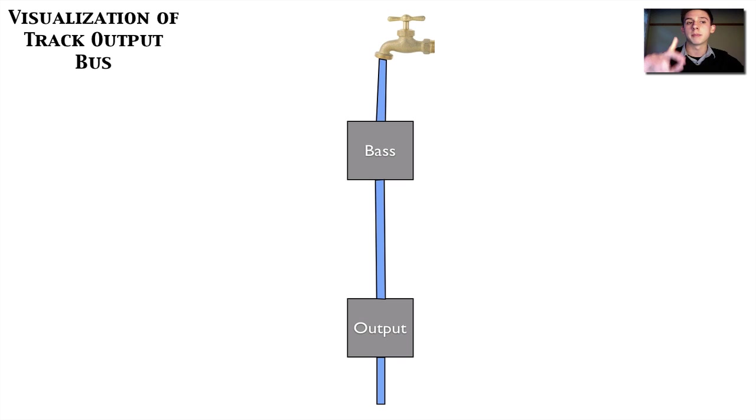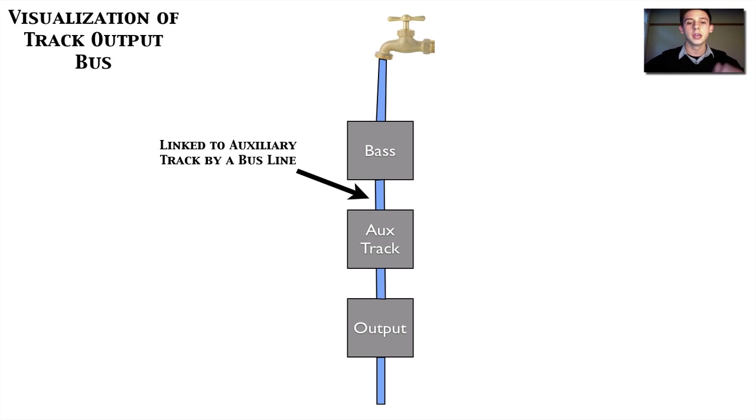So the first type of bussing I want to talk about is the output bus. Every track has an input and an output. By default, this bass track has an output to the stereo output, which you can visually see right here. Instead of being sent to that output, we're going to make it a bus line. That bus line is going to create an auxiliary track with an input of that bus. So what this is effectively doing is creating another stop for this water along the way. You can do anything you want here. You can do EQ compression. You could just leave it for volume, some mixing. Just know that this is what happens when you create an output bus. It's going to be connected by bus line, and it's going to be just like another junction to the flow.